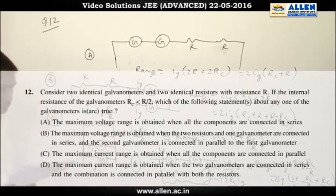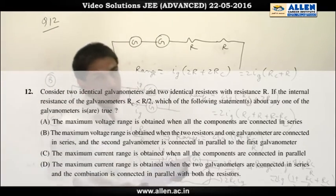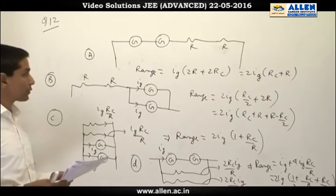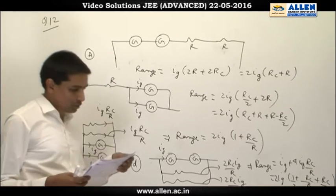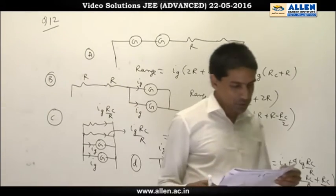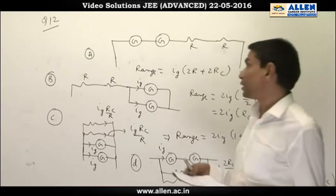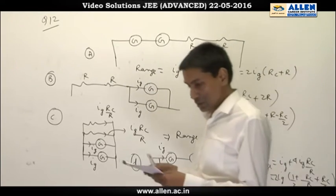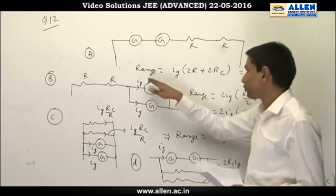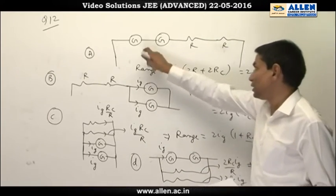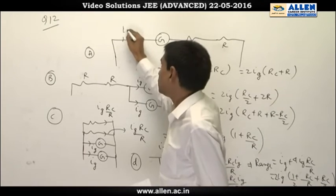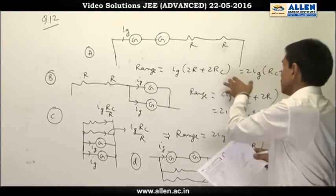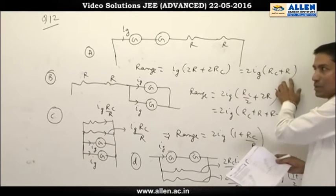In question 12, they ask for the range for two galvanometers and two resistors connected in different arrangements. In option A, the maximum voltage range is obtained when all components are connected in series — two galvanometers and two resistors in series. In this case, the voltage across the whole combination is I_G multiplied by (2R + 2R_C), which comes out to be 2I_G(R_C + R).